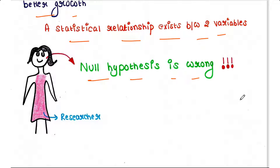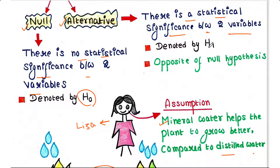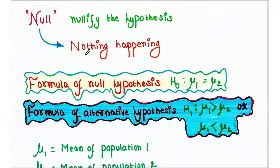A null hypothesis says that there is no statistical significance between the two variables. It is denoted by H₀. An alternative hypothesis says that there is a statistical significance between the two variables. It is denoted by H₁. Therefore, the alternative hypothesis is the opposite of the null hypothesis. The null hypothesis is named so since it is used to nullify the hypothesis that nothing is happening.